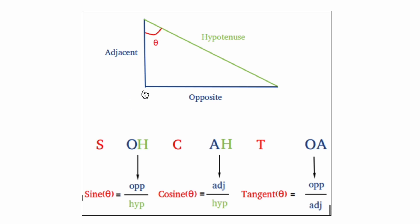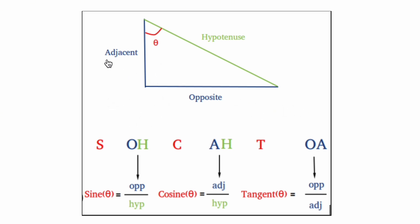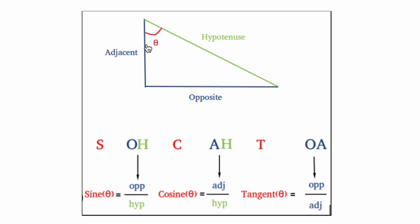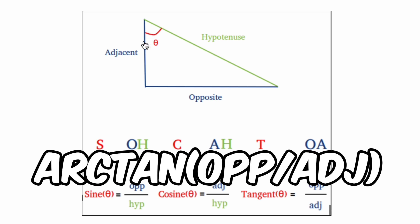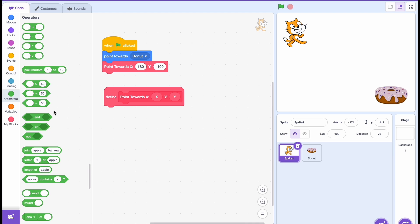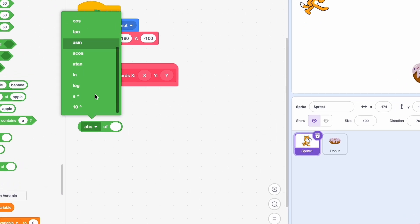So how do we get this side? Well, if we have our x position here and the x position of the sprite we want to turn towards, we just subtract them. We do the same for the y positions to get the adjacent. Then we have the tangent of this angle — but we want the angle itself, not its tangent. So we use arc tangent, which is the inverse of tangent, to get this angle.